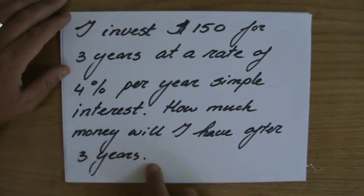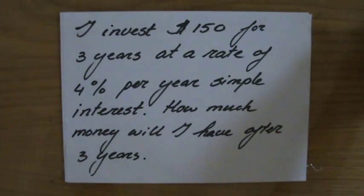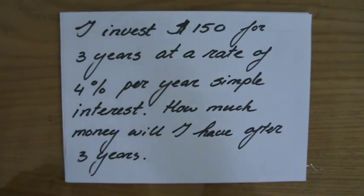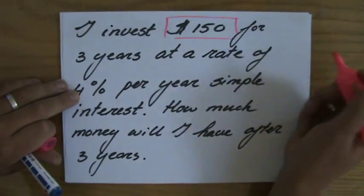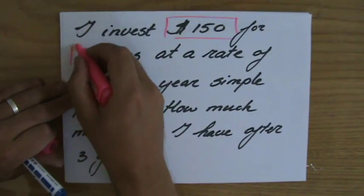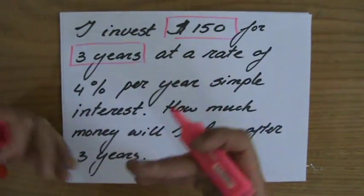Now it's always important to highlight the important words. So first of all, I have $150 and I invest that for three years. That is important information: how much money do I have and how long do I invest it.